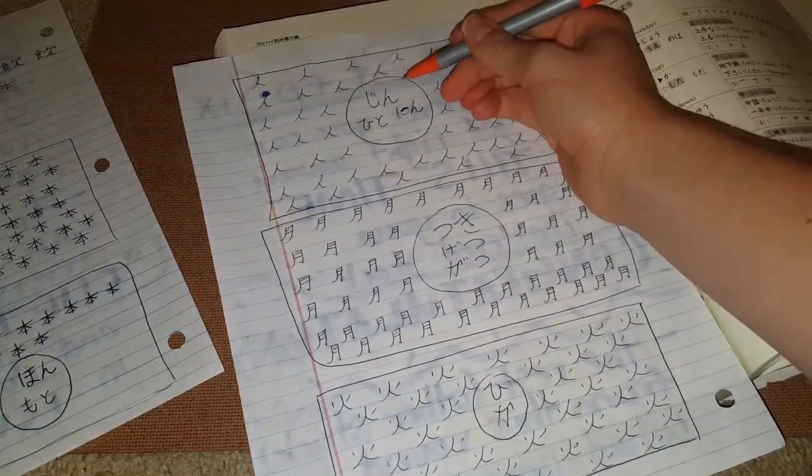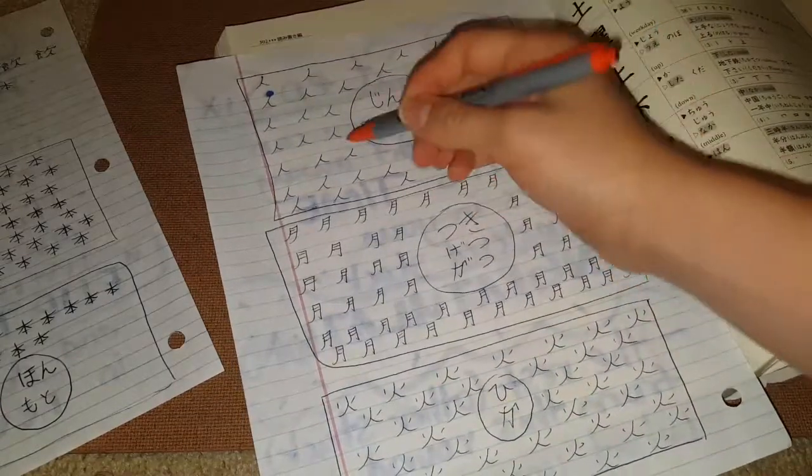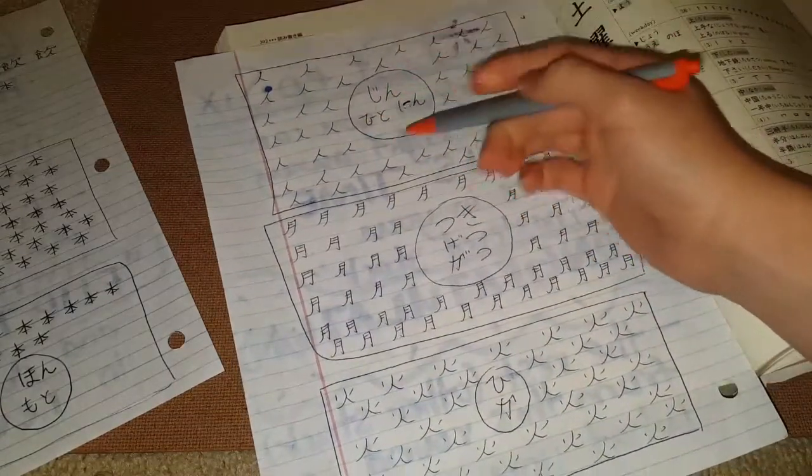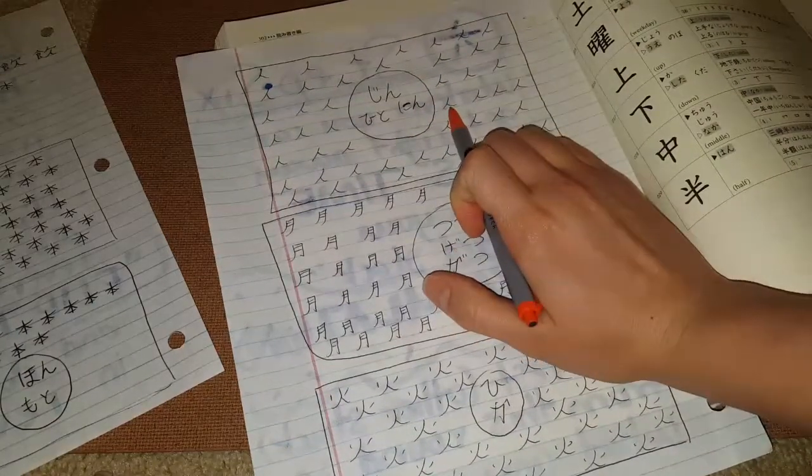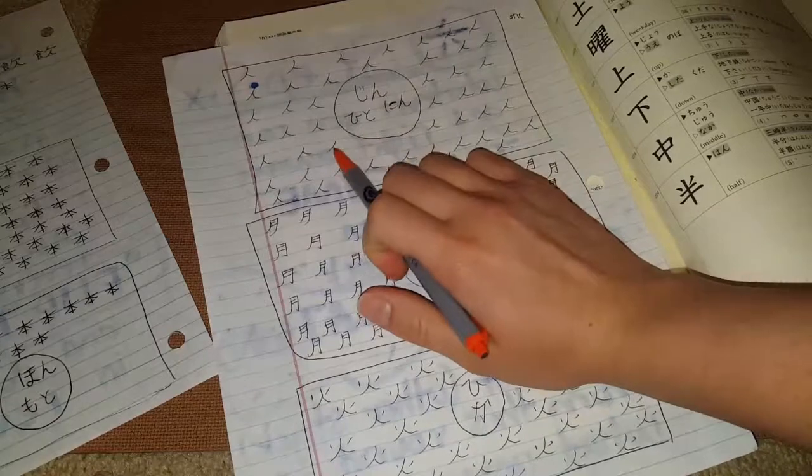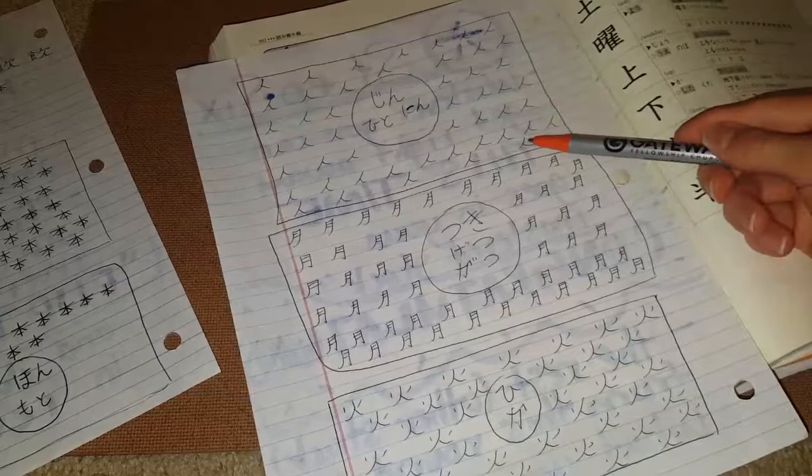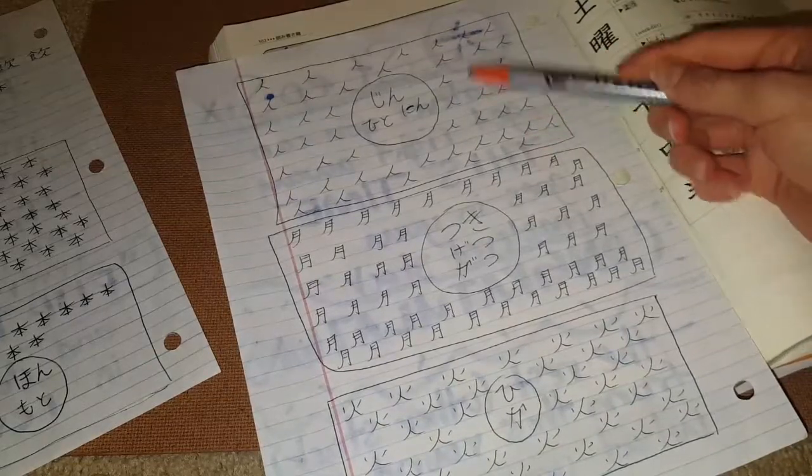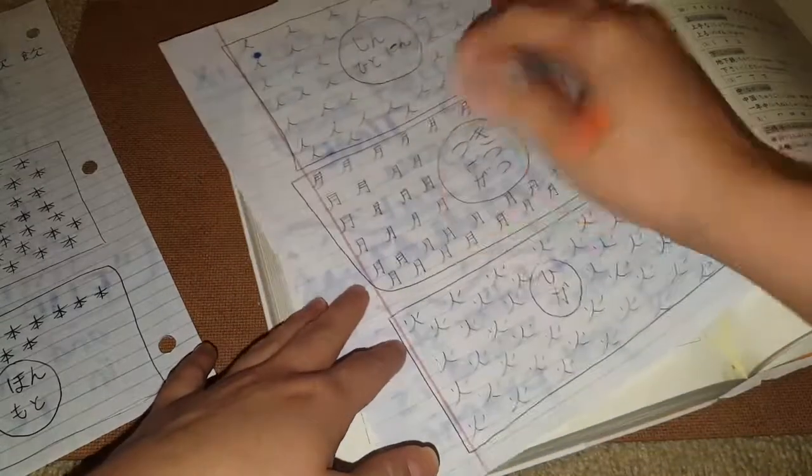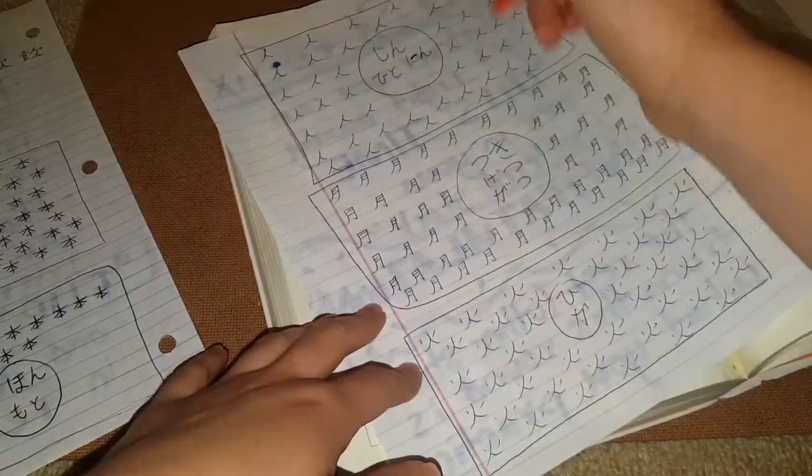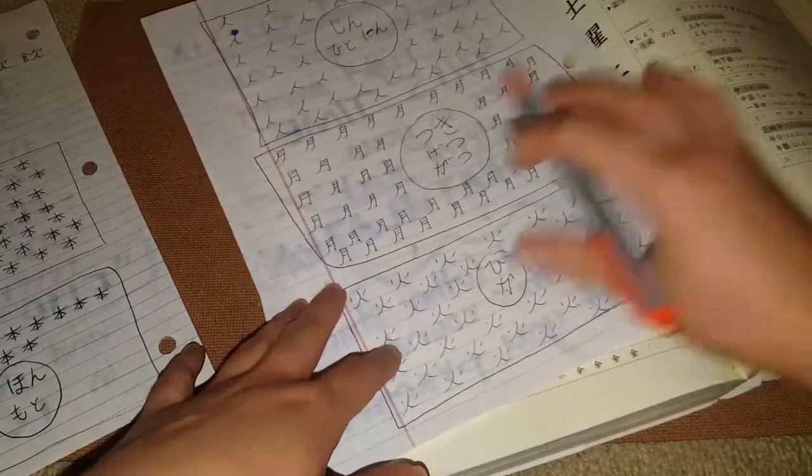So like, jin, this actually I messed up on. I should have put hito at the top because the main way that you would read this kanji when it's by itself is hito. And then jin and nin are the secondary readings. Usually when this is combined with another kanji, that's how it will be pronounced in the word or phrase. And so literally I just did that hito, hito, hito, jin, nin, hito, hito. And I just kept going.